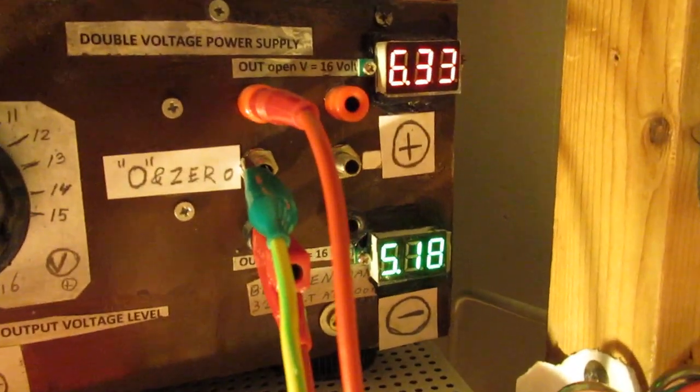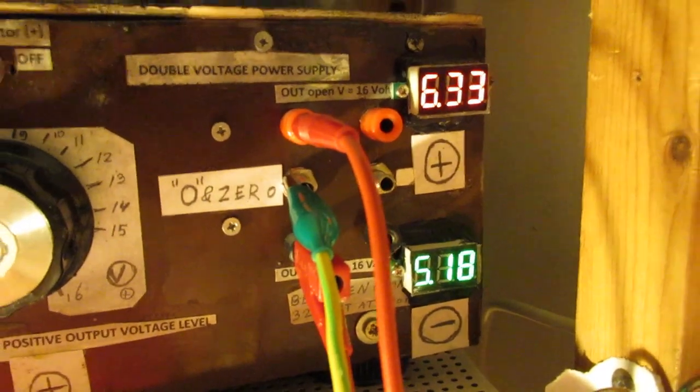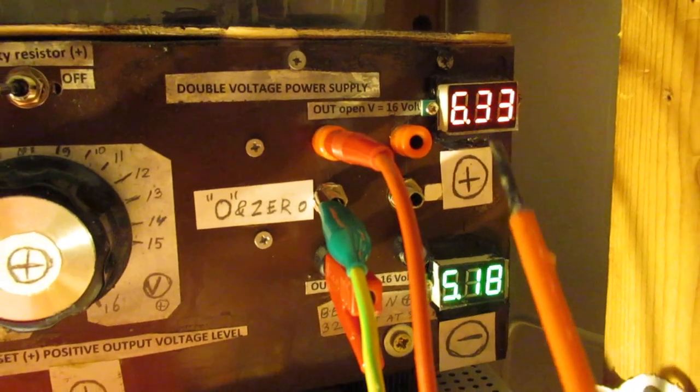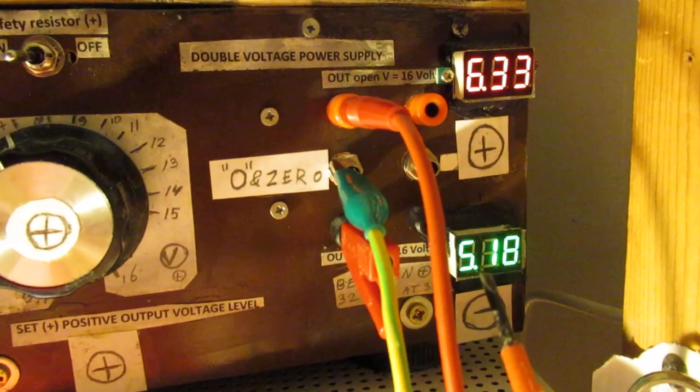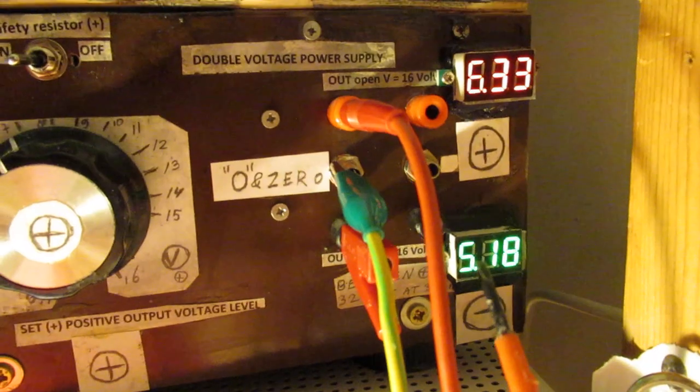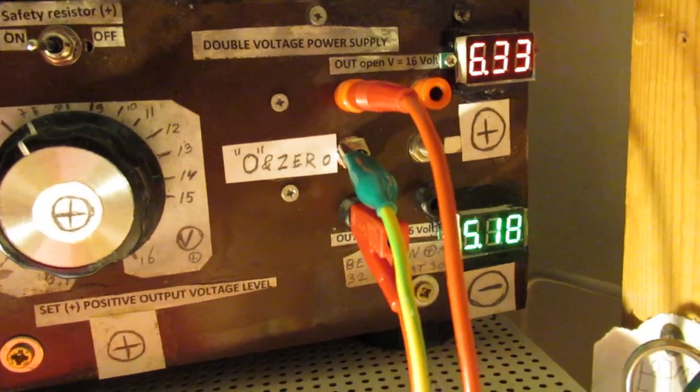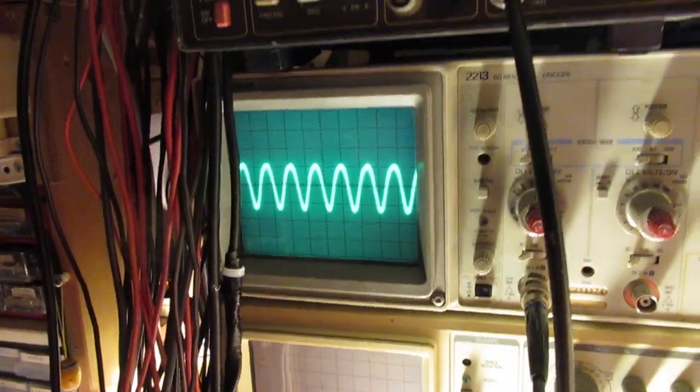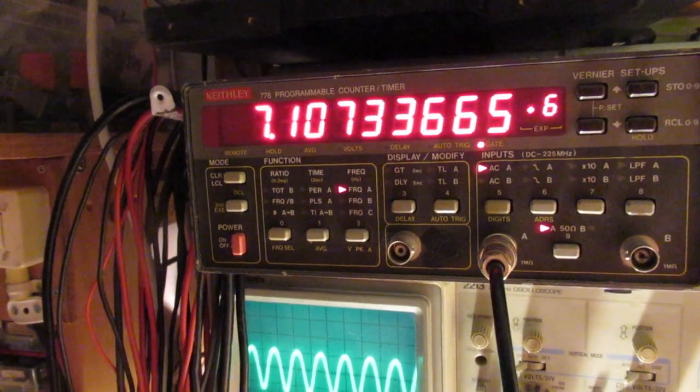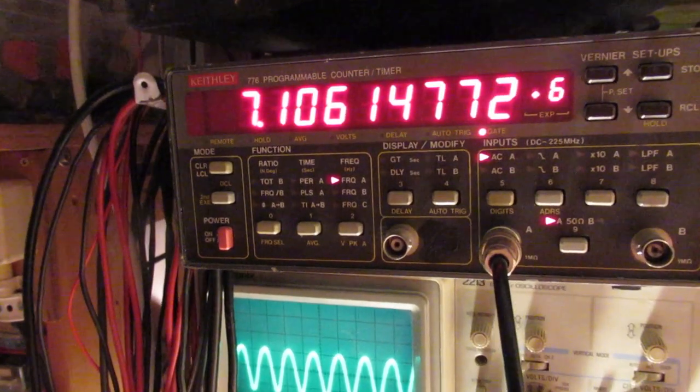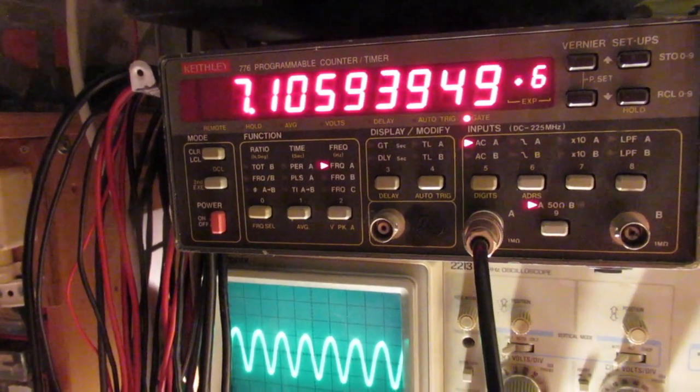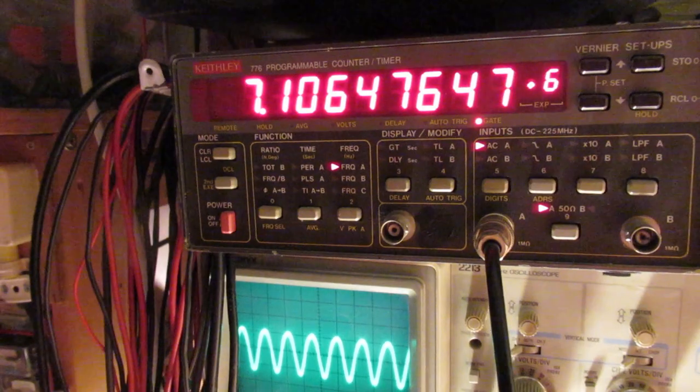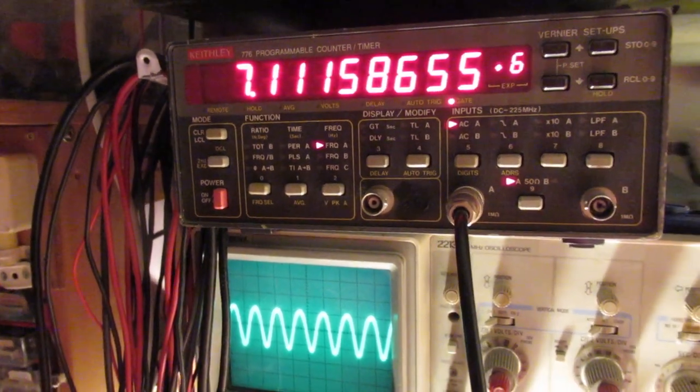And here are the values of these voltages now. 6.3 volts positive, 5.8 volt, sorry, 5.1 volt negative. And this is the waveform. And at the moment it oscillates on 7.1 megahertz. Without an external capacitor, without a coil, etc.